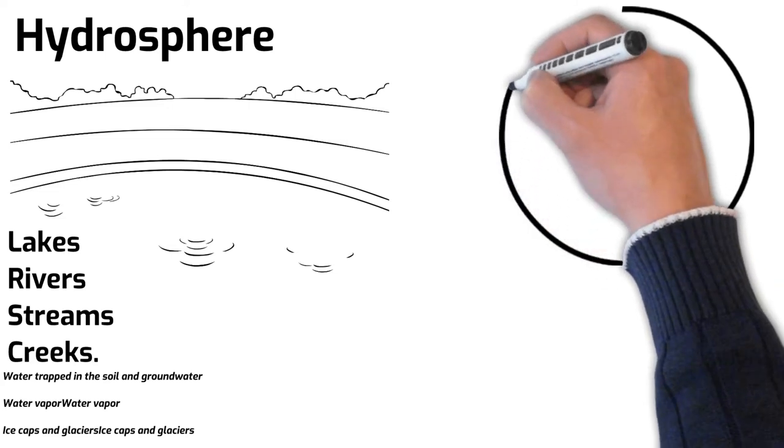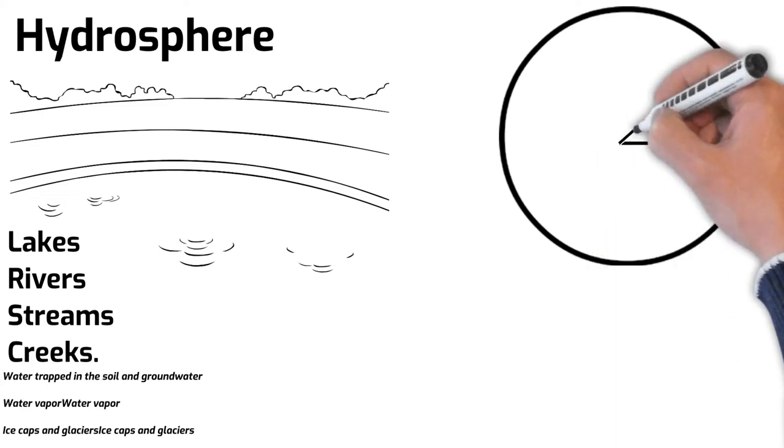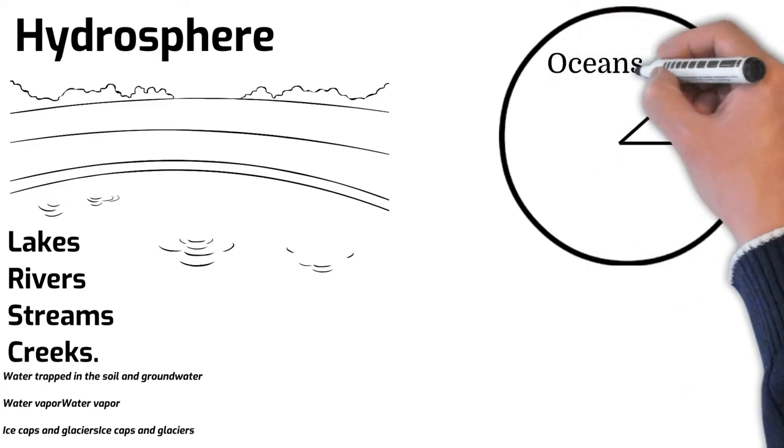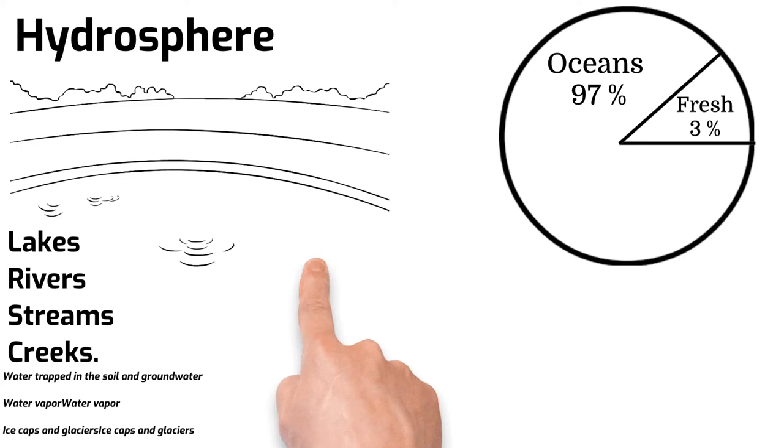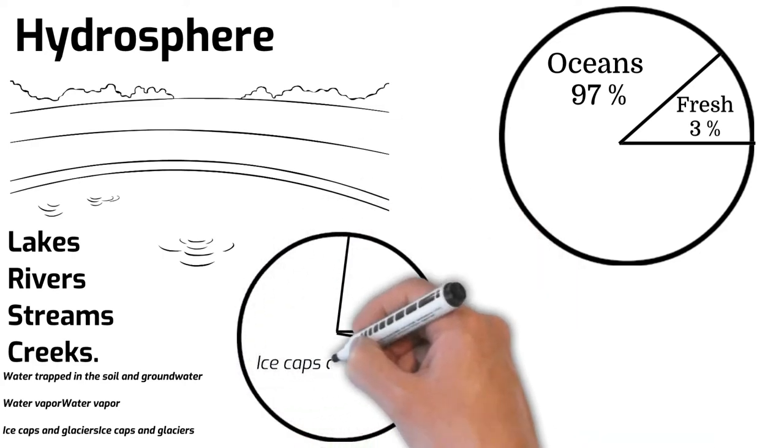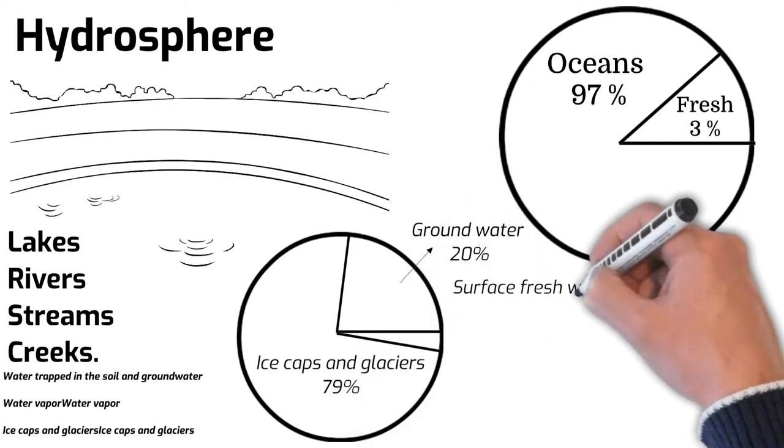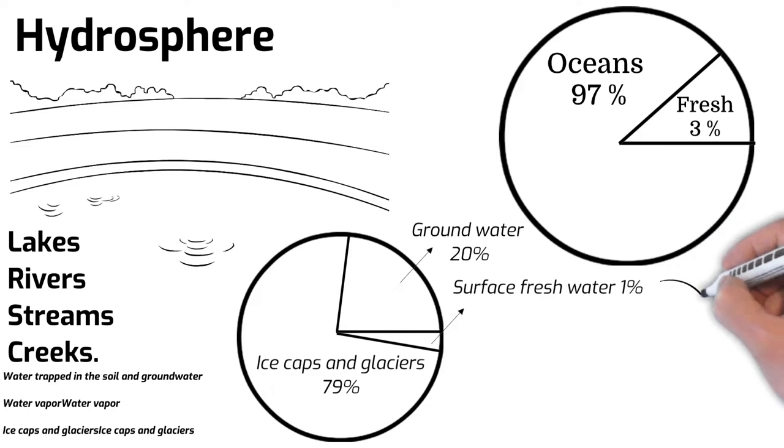Only about 3% of the water on the Earth is freshwater and about 70% of the freshwater is frozen in the form of glacial ice. Further, the distribution of freshwater is like we have 3% freshwater, and if we look into that distribution, 79% of the 3% is ice caps and glaciers, 20% is groundwater and only 1% is easily accessible surface freshwater.